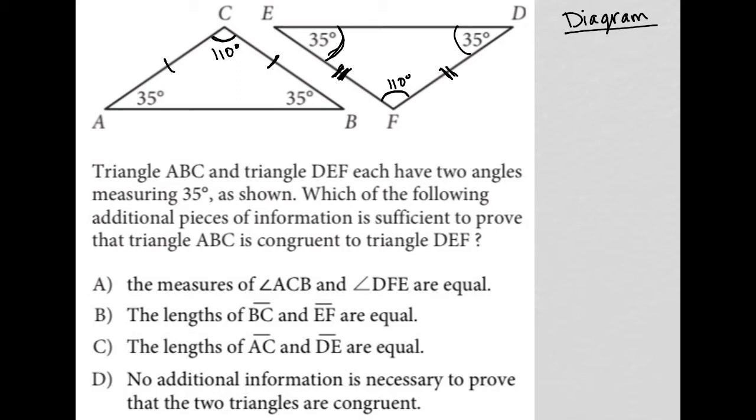So let's start reading and seeing if there's anything else that's provided. So the question says triangle ABC and triangle DEF each have two angles measuring 35 degrees as shown. We saw that.